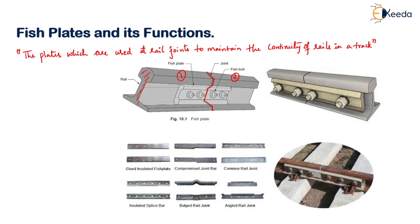There are many types of fish plates. These are all the different types: glued, insulated, compromised, common rail, insulated, fly, bulger rail, and angled rail. Details about the types of fish plates we will study further.